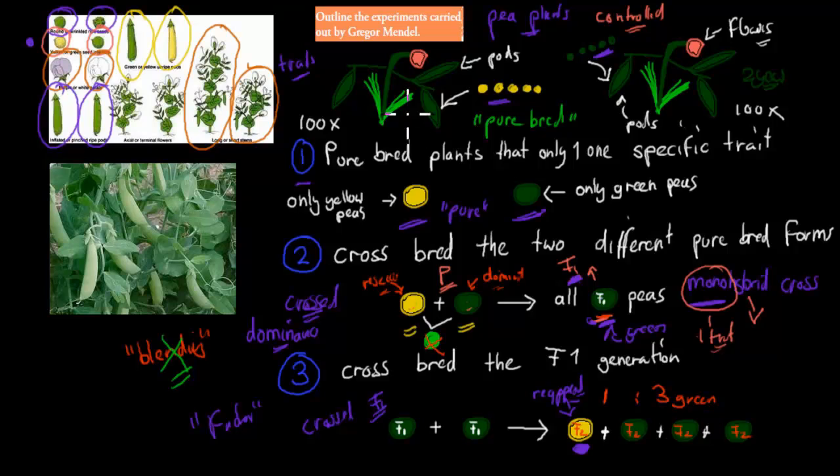So I'll quickly go over again what he did. At first, for two years, he made sure he had pure breeds. So he kept self-pollinating, crossing between the pure breeds. So always the green ones bred with the green ones, and the yellow ones bred with the yellow ones. And over time, he had his pure ones, which only produced yellow ones. The other ones only produced green ones.